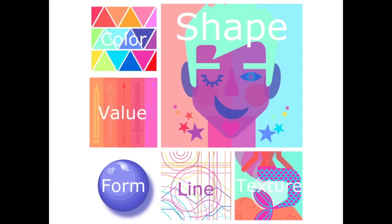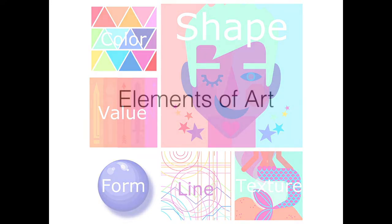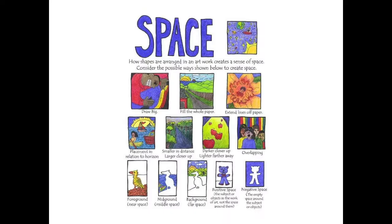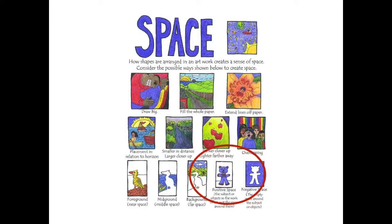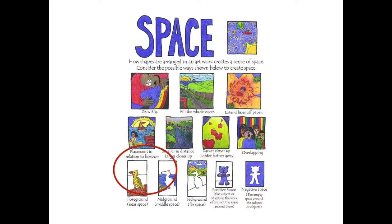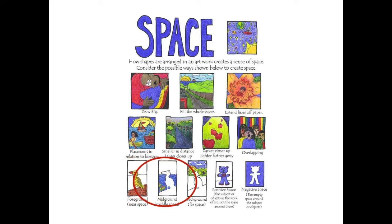Taking a look at the elements of art, they are color, shape, value, form, line, and texture. In the element of space, what we did last week was positive space and negative space. This week we're going to create some depth using space by adding items to the foreground, middle ground, and background.